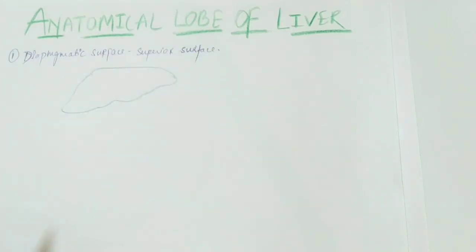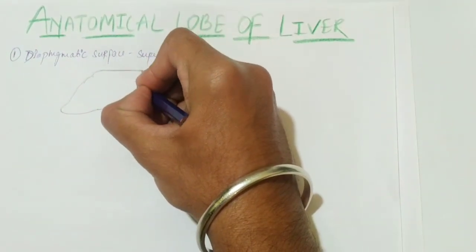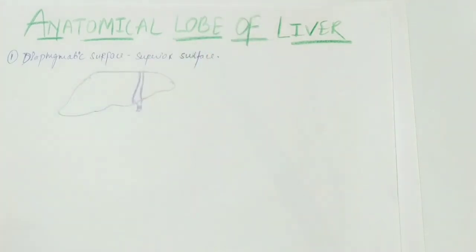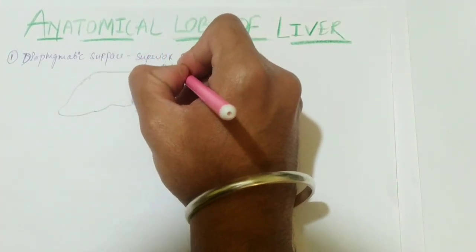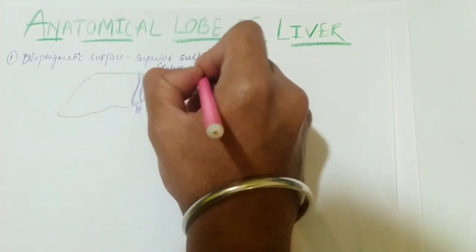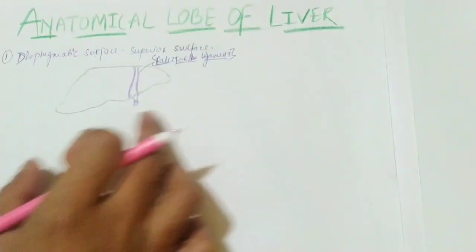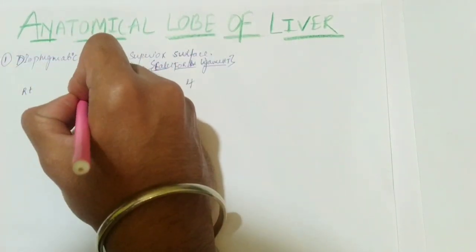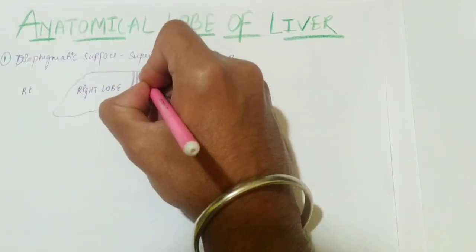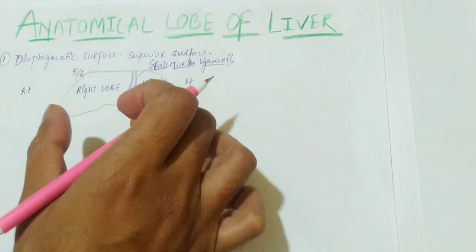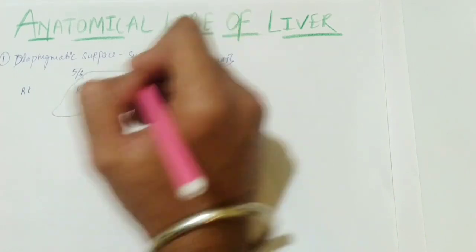This is the superior or diaphragmatic surface of the liver, and it is divided by the falciform ligament into two lobes. The falciform ligament is a peritoneal fold or peritoneal ligament — I will explain it in detail in the ligaments video. On the diaphragmatic surface, the falciform ligament divides it into the right lobe and the left lobe. The right lobe covers five-sixths of the diaphragmatic surface and the left lobe covers one-sixth.